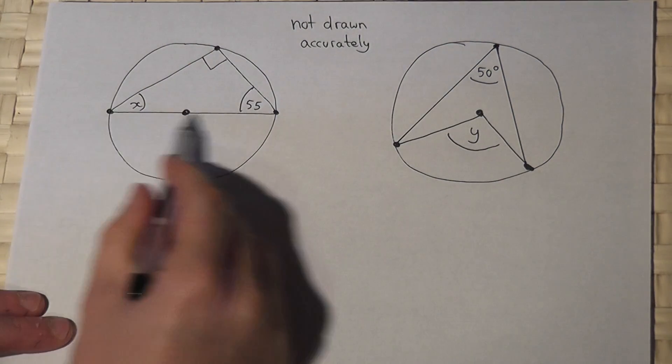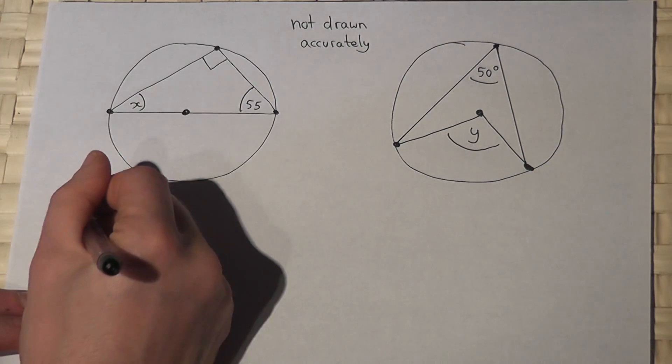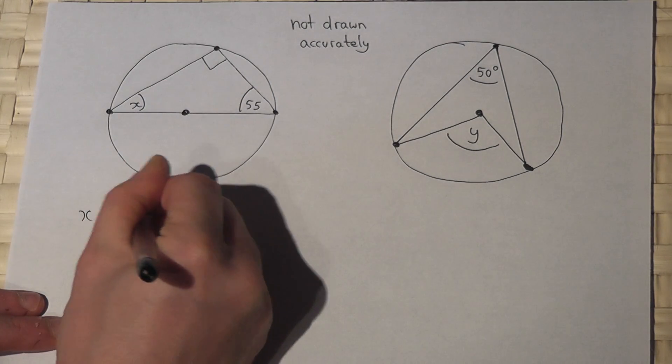So if we have a diameter, the angle opposite is 90. So therefore, to find x, I'll do 180 for the angles in a triangle,